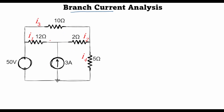In branch current analysis we formulate a current in each branch. Let's say I1 flows through this branch, I2 is a current flowing towards this node, I3 is a current in this branch, and I4 is the current that we want to find out. As you can see, I1 and I2 are both entering this node, and 3 amperes is also entering this node, so I can write: I1 plus I2 equals minus 3 amperes. This is equation 1.